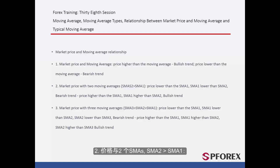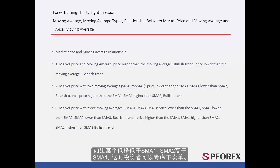2. Price with two SMAs: SMA2 is greater than SMA1. If a price is under SMA1 and SMA2 is above SMA1, then a trader can place a sell order. If a price is over SMA1 while SMA1 is higher than SMA2, then an upward trend would be more probable.